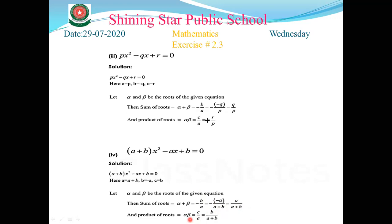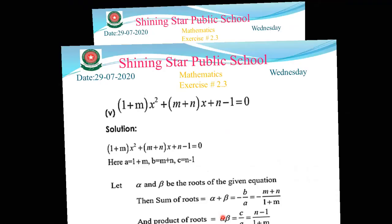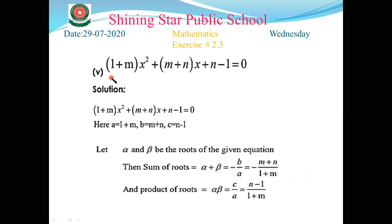For the product of roots, alpha times beta = c/a. The value of c is b and the value of a is (a+b), so the product of roots is b/(a+b). That is the required answer for part number four.